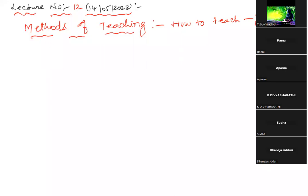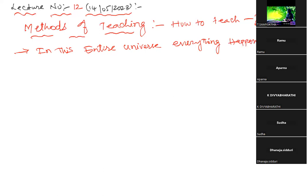In the previous class, I told you that we will discuss the definitions chapter-wise. Whatever definitions are related to the concerned chapter, we will discuss them. For example, what it means by maths in the case of the history of mathematics, and what it means in the case of methods of teaching. One definition is: in this entire universe, everything happens mathematically.